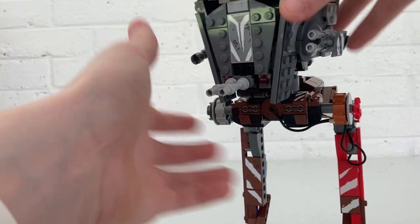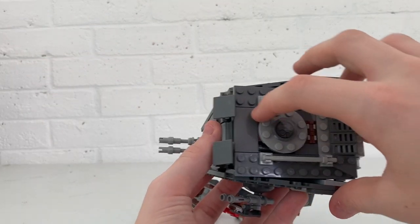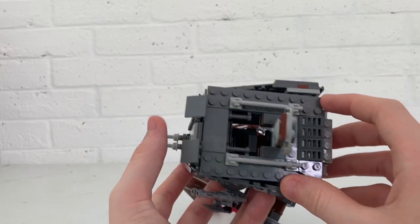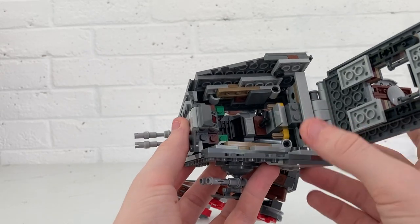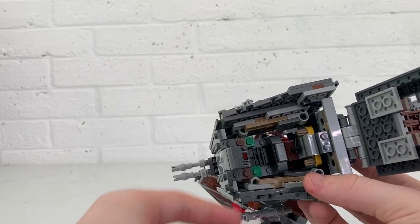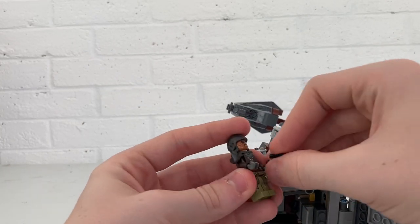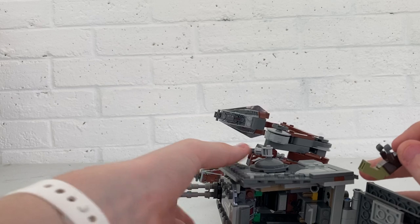Obviously in the show they use this little hatch here, but of course you can't get a minifigure in there. So LEGO's helped you out and they've added another thing there so you can open it up just like that. We're gonna take this Raider and we're just gonna take off his guns.